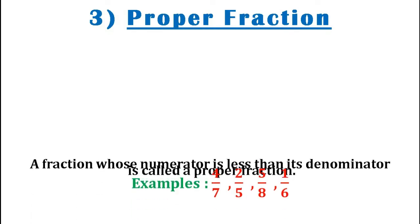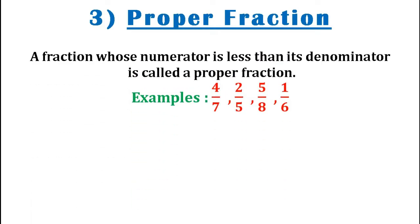The third type is known as a proper fraction. A fraction whose numerator is less than its denominator is called a proper fraction. There are some examples shown here: 4 by 7, 2 by 5, 5 by 8, and 1 by 6. All these four fractions are examples of proper fractions, because all these fractions have a numerator less than their denominator.